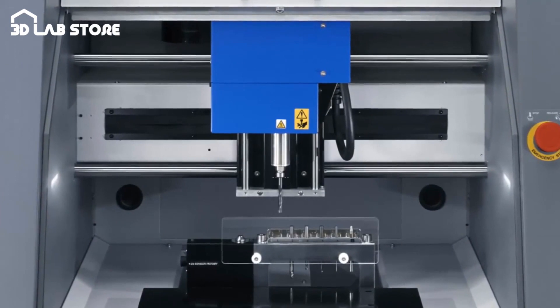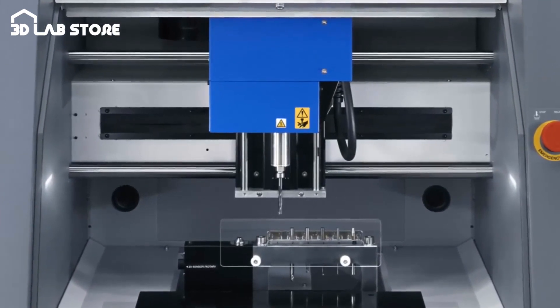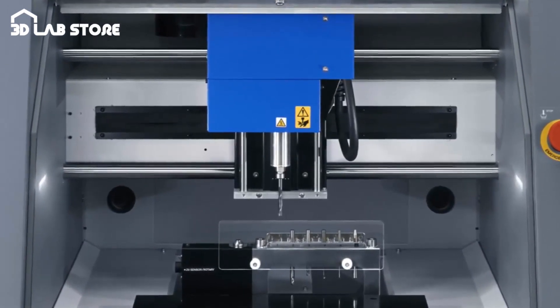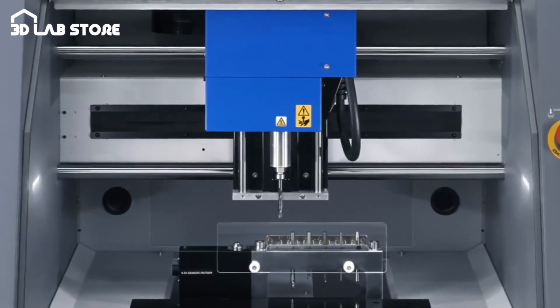The 15,000 RPM user replaceable spindle reduces downtime and can drive tools with a 1/4 inch or 1/8 inch shank.